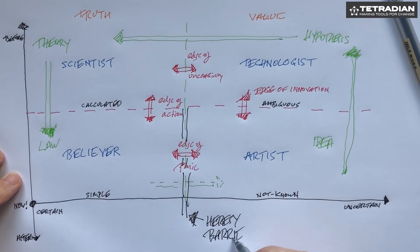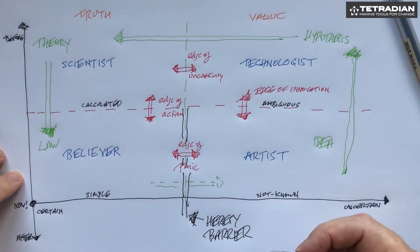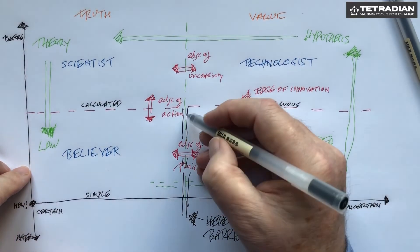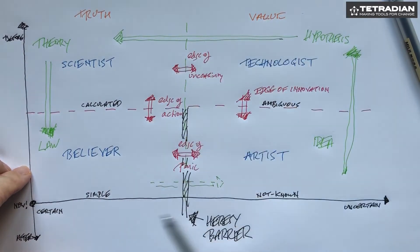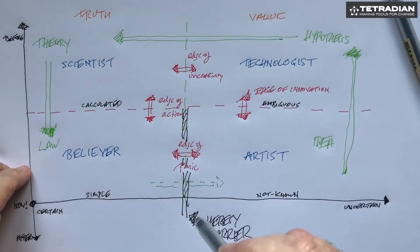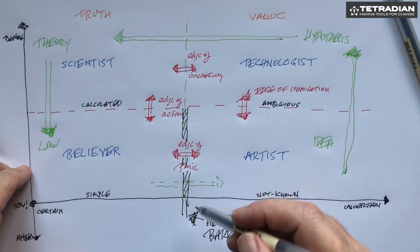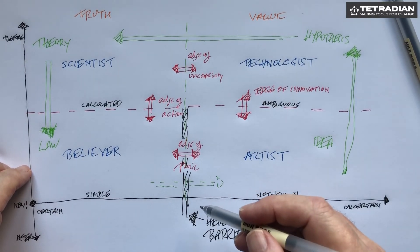And in every organisation, every context, wherever there's a rule that is being followed and is treated as the truth, we will have problems with a heresy barrier. So one of our tasks in making sense of complexity and uncertainty in dealing with all of these transitions is to face that barrier. Otherwise we will never be able to get any innovation working at all.